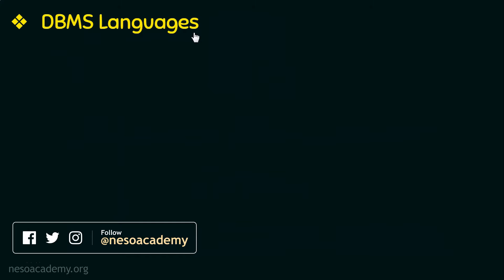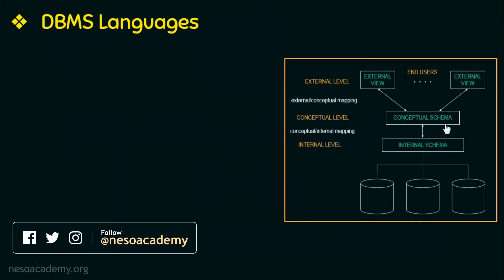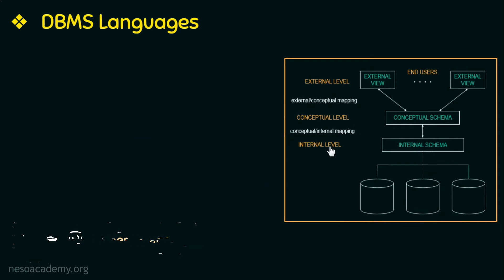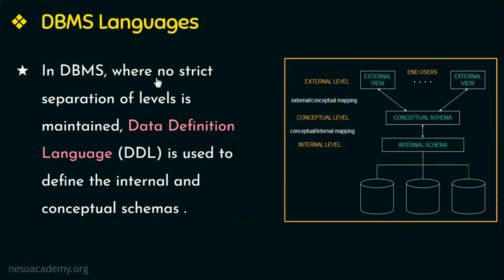Once the database design is completed, the first thing done is to specify the conceptual schema and the internal schema, and any mapping between these two levels. In certain DBMS where there is no strict separation of levels maintained, a language called Data Definition Language or DDL is used to define these schemas — the internal schema and the conceptual schema. This language is used mainly by the database administrators and the database designers.